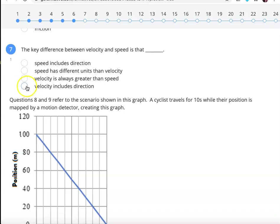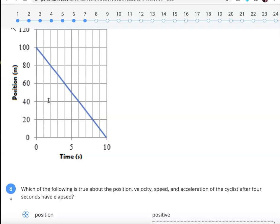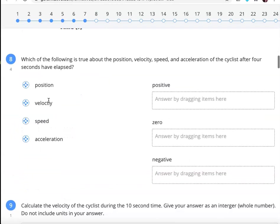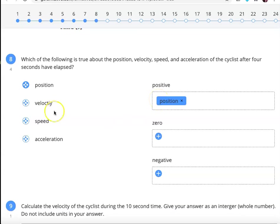The key difference between velocity and speed is velocity includes direction, which is actually why my answer to number 9 is negative 10, not positive 10. Now, some people are having trouble getting these to drag and drop correctly. What you can do when you're working on this is when you click on position, for instance, then I can hit positive and I don't have to drag it over.